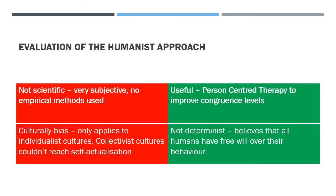Evaluating the humanist approach: negatives include that it is not scientific and very subjective, with no empirical methods or replicability. It also has a cultural bias — Maslow's hierarchy of needs only applies to individualistic cultures. In collectivist cultures, individuals prefer working together rather than focusing on individual achievements, making self-actualisation harder to reach. Positives include that person-centred therapy is useful for improving congruence and mental health. It is also not determinist — it says no behaviour is pre-decided and we have full free will, allowing us to take responsibility for our actions.